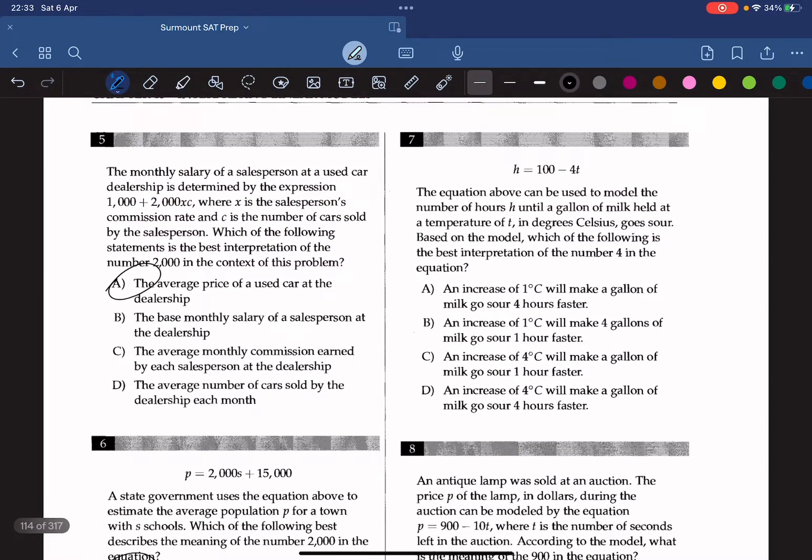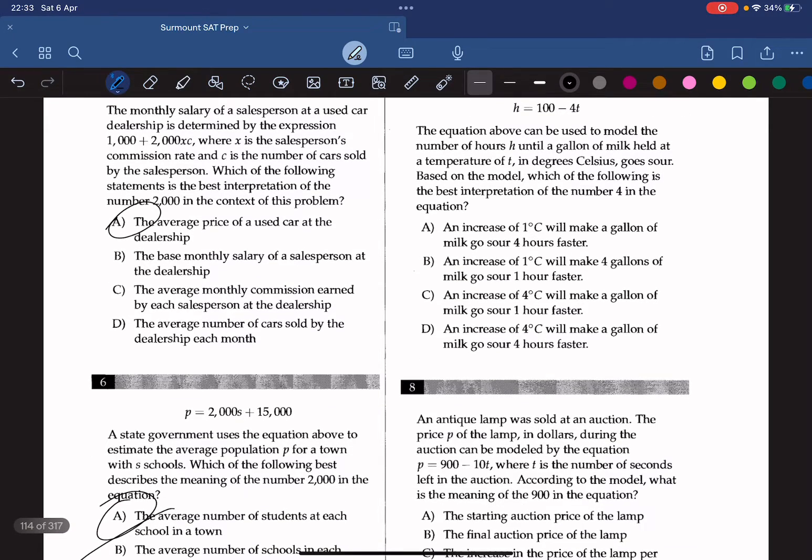The equation above can be used to model the number of hours h until a gallon of milk held at a temperature of T in degrees Celsius goes sour. Based on the model, which of the following is the best interpretation of the number 4 in the equation? The number 4 again refers to the slope, and in this case it's negative 4, which means an increase of 1 degree would decrease the number of hours until a gallon of milk goes sour by 4, which means that the milk goes sour 4 hours faster. So the answer here should be A.